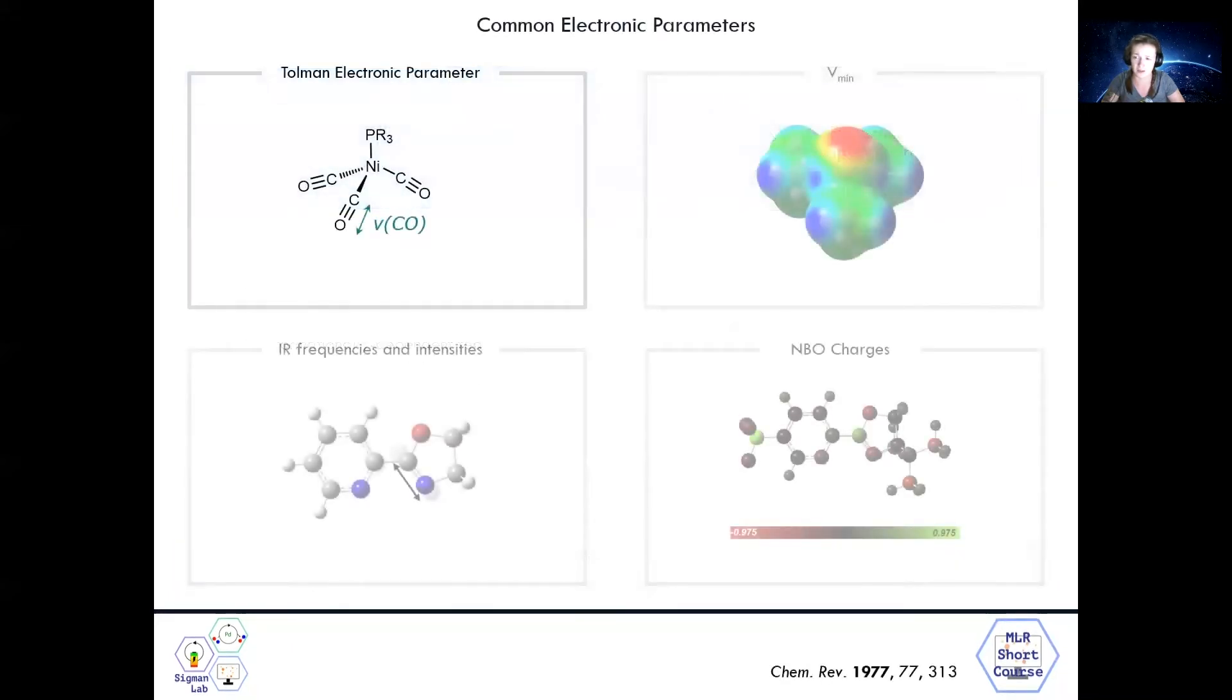To start with some commonly used electronic parameters, the Tolman electronic parameter was introduced in the 70s as a way to quantitatively define the electron donating or withdrawing ability of phosphine ligands. Tolman measured the CO stretching frequency of nickel carbonyl complexes as a function of changing the phosphine ligand on nickel.